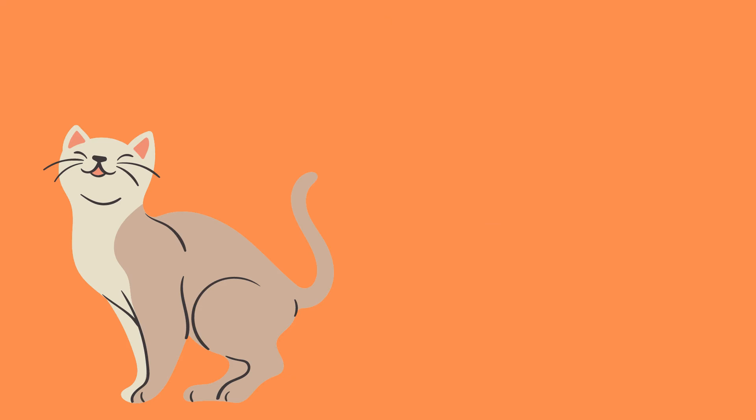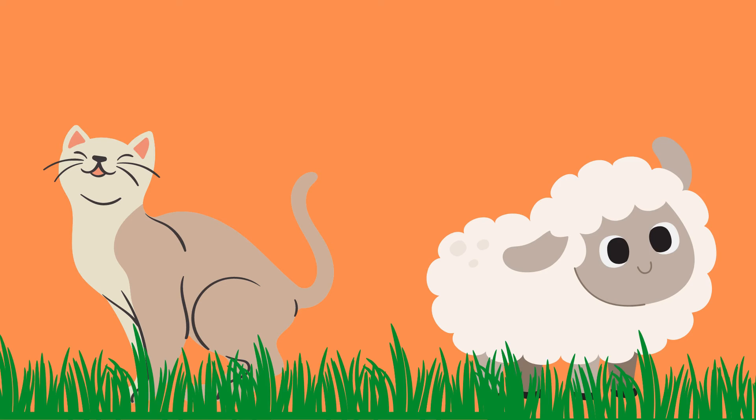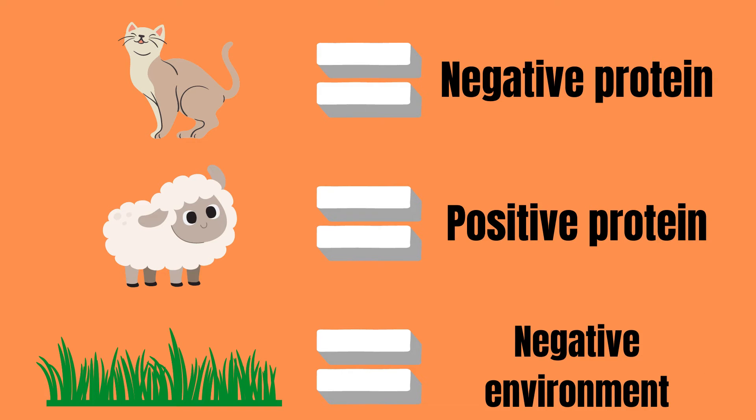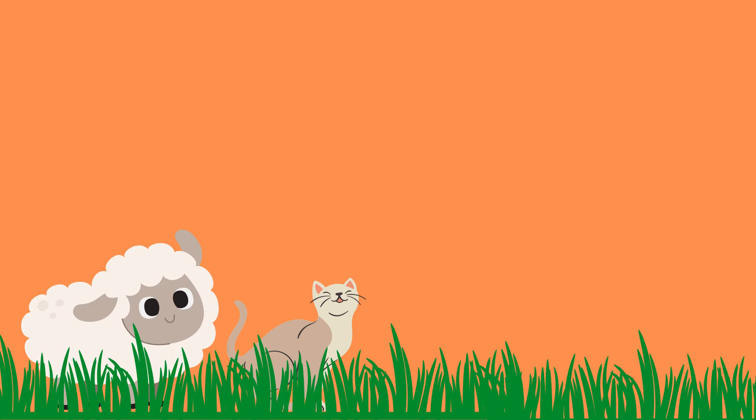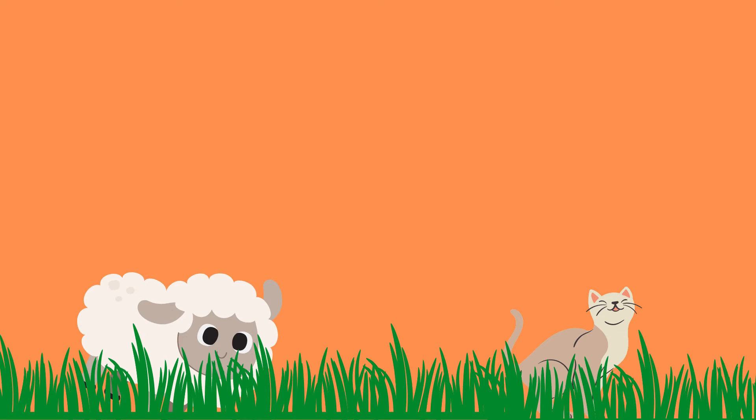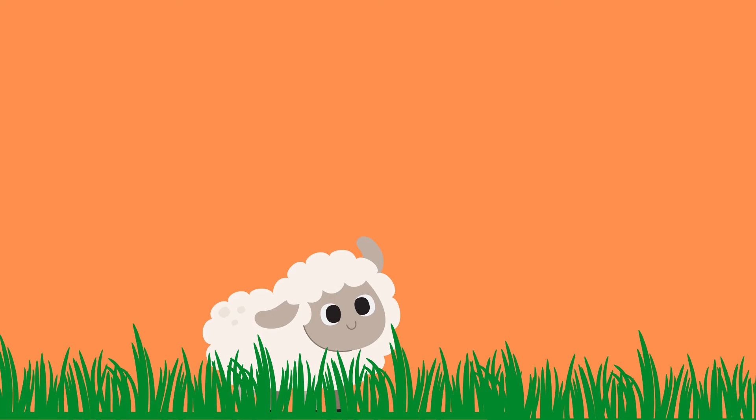To further clarify how this system works, imagine a cat and a sheep walking across a grassy field. In this case the cat is the more negatively charged protein, the sheep is the more positively charged protein and the grassy field is the negatively charged anion exchange resins all around in the environment. The sheep will be constantly distracted by all of the tasty grass and just stop and eat it while the cat just keeps on walking.